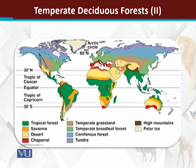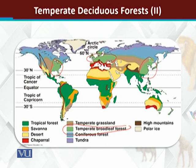Looking at the distribution, Temperate Deciduous Forests are found in America's eastern part, similarly some part of Europe, Japan and Korea, and some parts of Australia. These are the different areas where Temperate Deciduous Forests were or are found. Many no longer exist because they have been removed for agricultural practices.